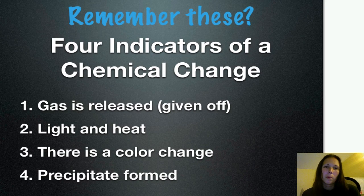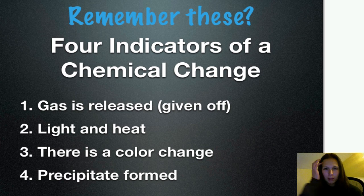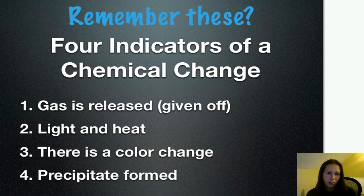Hopefully, you kids remember these, the four indicators of chemical change. We are looking at, specifically in the next slide, we're going to be looking at a precipitate being formed to know that there's been a chemical reaction. But, you guys also need to remember that if a gas is released or given off, if light and heat are released, or if there's a color change, then a chemical reaction has occurred.